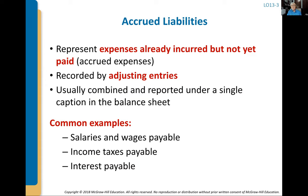Accrued liabilities are for expenses that many times are going to be estimated expenses, not as clear. We record those as adjusting entries. At the end of the accounting period — using that December 31st example — during the January accounting close process, we're going to go through and do adjusting entries. We're going to find out all the things that were liabilities at December 31st. Maybe we haven't paid our employees but they did work for us, so we credit salaries payable and debit salaries expense. We may have income tax payable, or some interest payable.